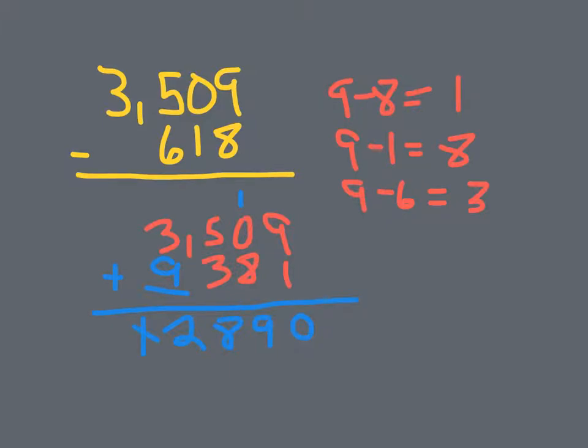Cross off the one. Place it here. Redo your addition and you get two thousand eight hundred ninety-one. And when we check our answer key, guess what? We got it right. Give yourself a smiley face.